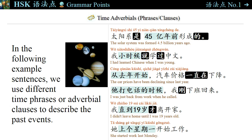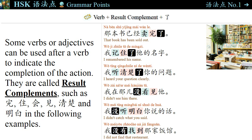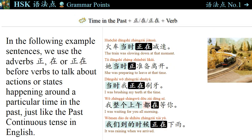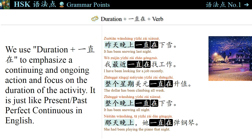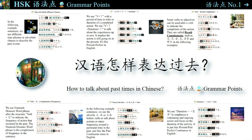Hi everyone, welcome to daily中文, 每日中文. Tense refers to different forms of verbs. Chinese verbs do not indicate tense — they all have the same form regardless of the time. We can use time adverbials, result complements, adverbs, and aspect particles to express different times in a sentence. Today, let's learn different ways to express past time. 汉语怎样表达过去? How to talk about past times in Chinese?